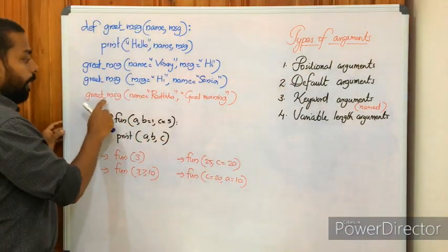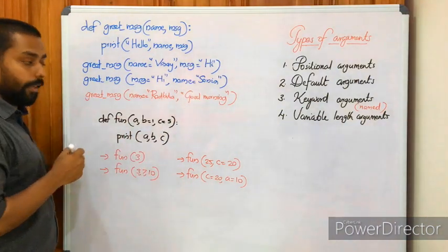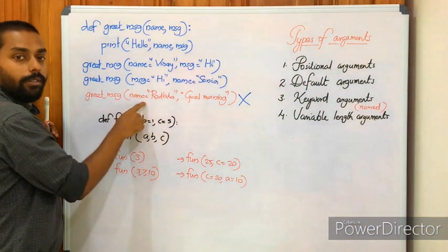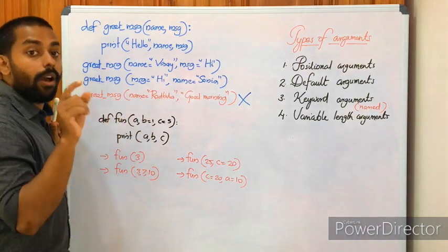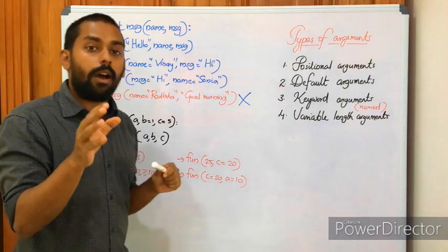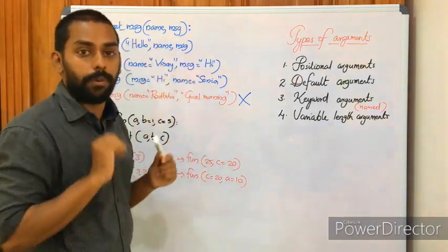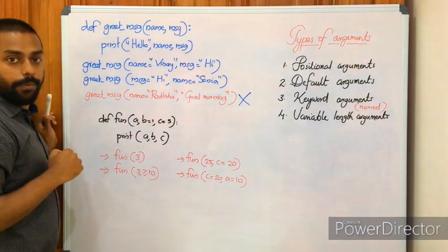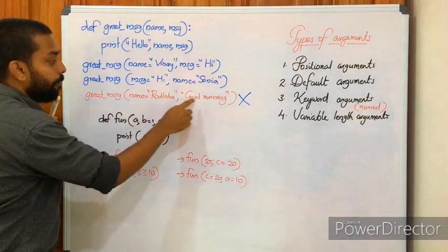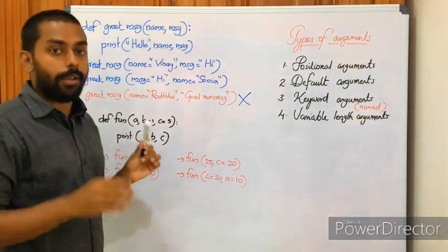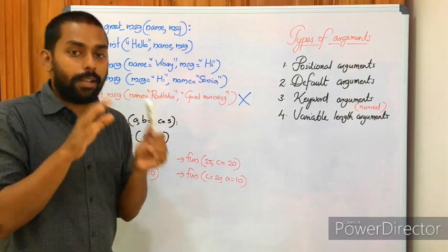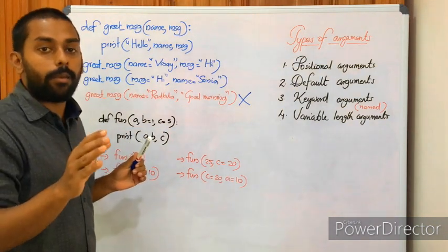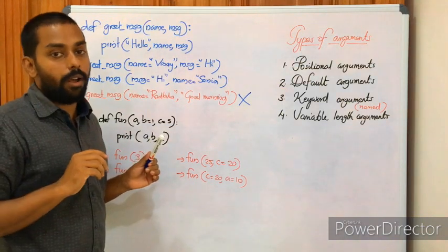Let's see an example: greet_message(name='radhika', 'good morning'). Is there any problem? Yes, it is a wrong statement. We have a rule: if we have any positional argument, it must be used first. Here we have a positional argument 'good morning' — this must be used first, then the keyword argument. The correct form is: greet_message('good morning', name='radhika'), because positional arguments must come before keyword arguments in a single function calling statement.